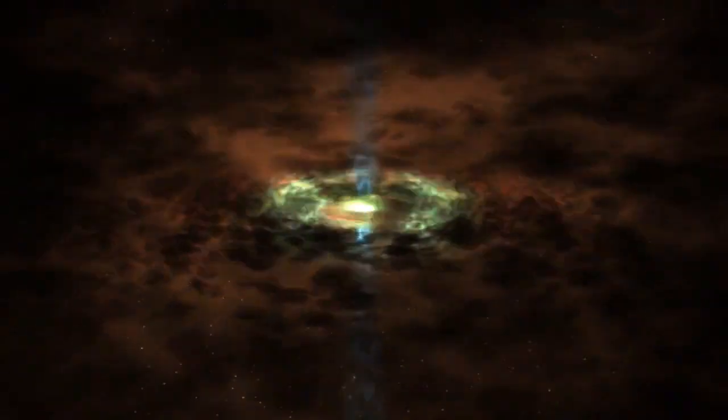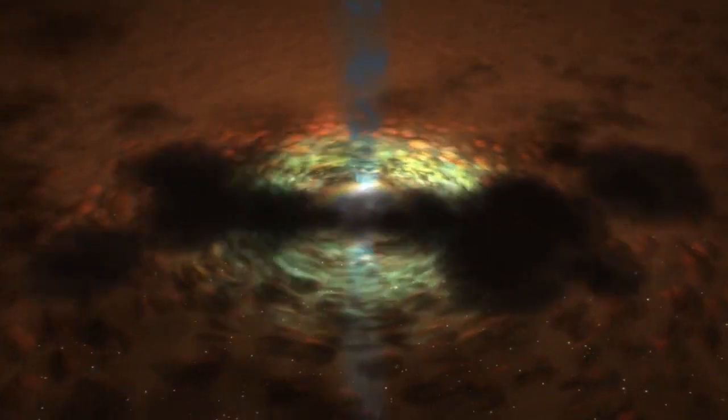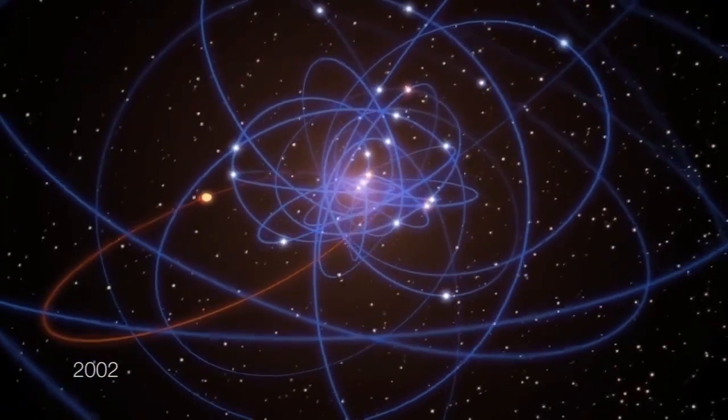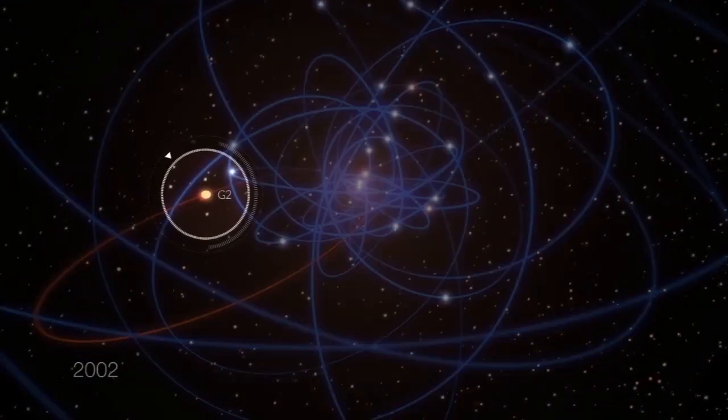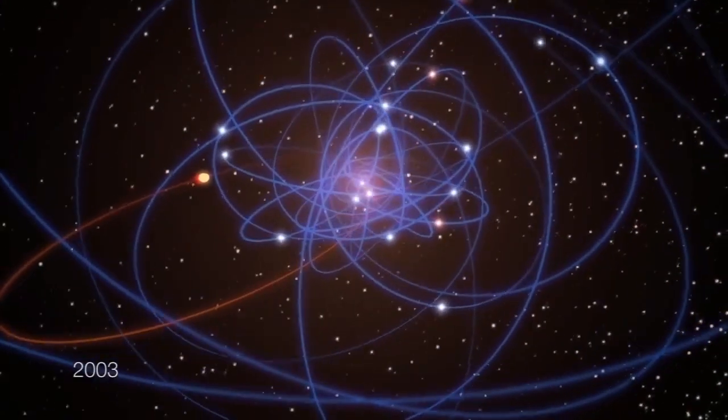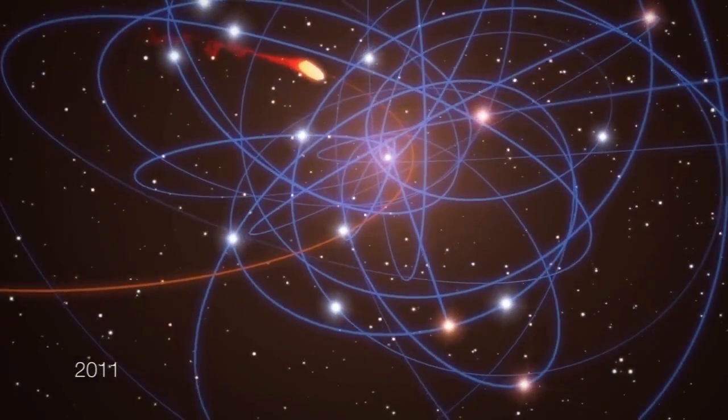As you might imagine, the environment around it is a mess. There's gas and dust everywhere, and quite a few stars circling it. Some years ago, an anomaly was found, an elongated blip of light called G2 that looked very much like a small gas cloud orbiting the black hole. It was on a tight elliptical orbit.